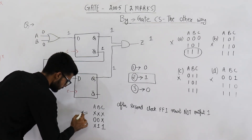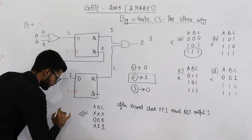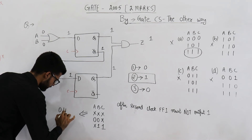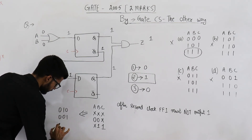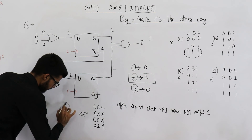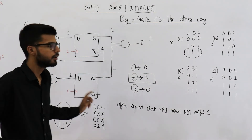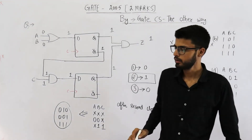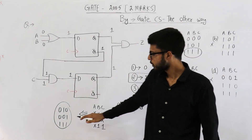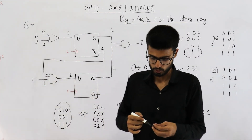Let me substitute some values for the don't-care positions. For example: first input 0,1,0; second input 0,0,1; third input 1,1,1. You can see at the end of this input sequence, the output will be 1. None of the given options match this condition — but this pattern will work. At the end of this input sequence, the output is going to be 1.